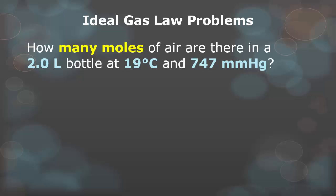The following questions will be checked in class. Please do these problems to the best of your ability, and we will go over them. Using the PV equals nRT formula, how many moles of air are there in a 2.0 liter bottle at 19 degrees Celsius and 747 millimeters of mercury?